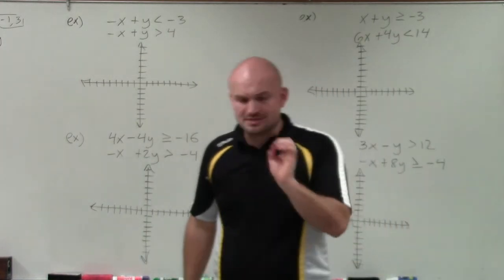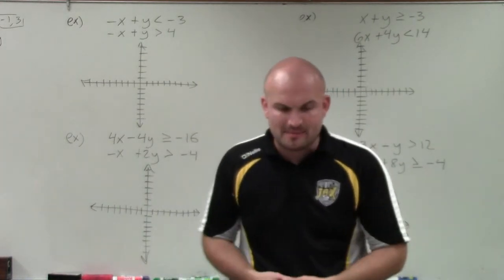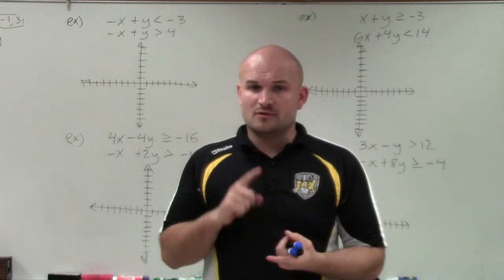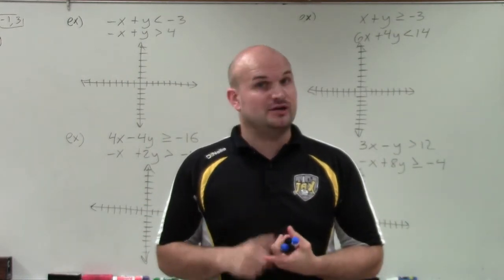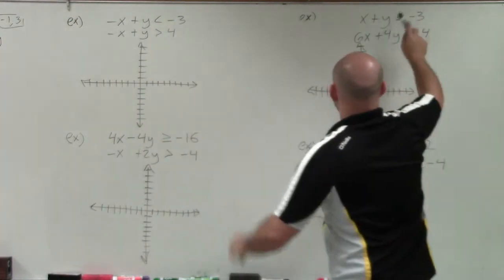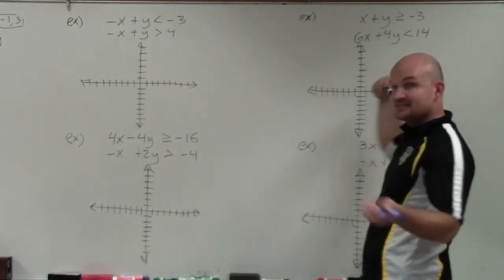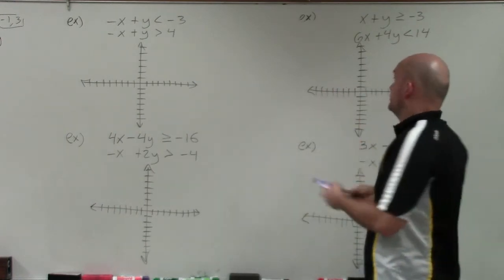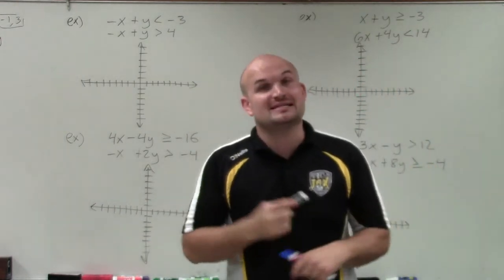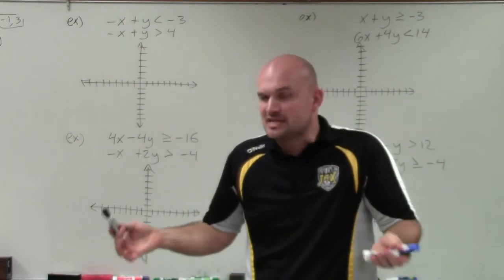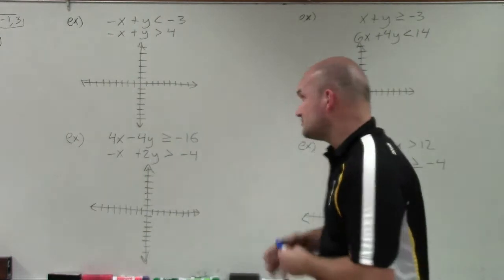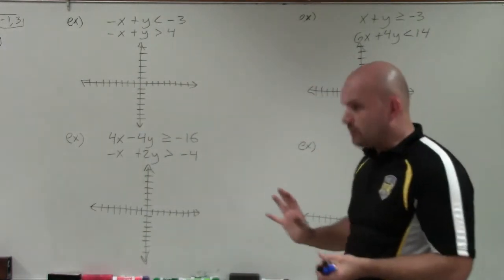Remember for inequalities, there are a couple of important things we need to remember. First, the boundary line can either be solid or dashed. If it's greater than or equal to, or less than or equal to, it's going to be solid, meaning it's part of the solution. If it's greater than or less than, it's going to be dashed, meaning it's not part of the solution. We can use test points to verify each one of those.